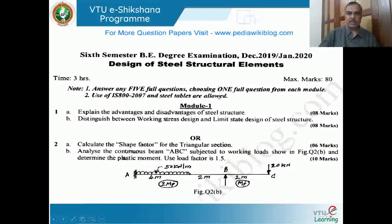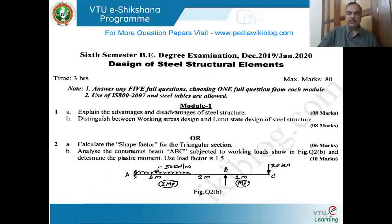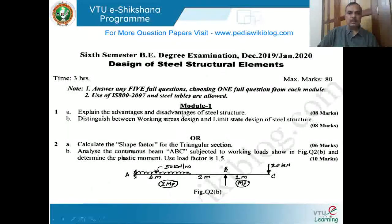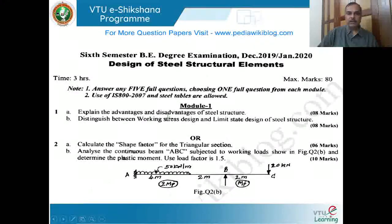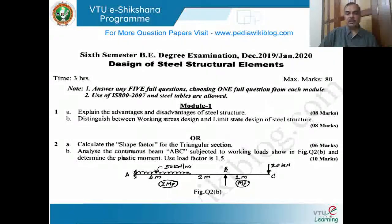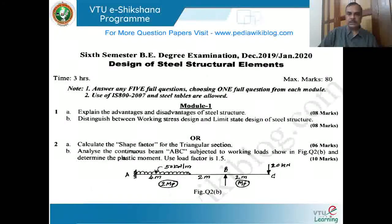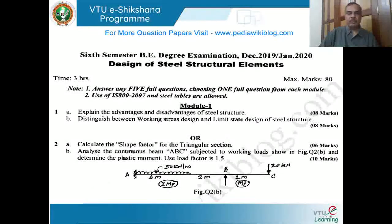As far as module one is concerned, this is connected with the basics of steel structures, the limit state method of steel, and a chapter on plastic analysis and design. The questions are rather simple and many answers can be obtained from IS 800. The first question asks you to explain the advantages and disadvantages of steel structures, which has been covered in the first session — about eight to ten advantages and four to five disadvantages. Refer to my notes, PPT presentation given to VTU, and video lectures.